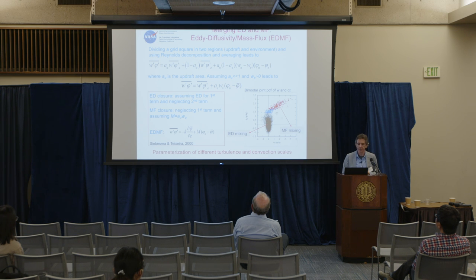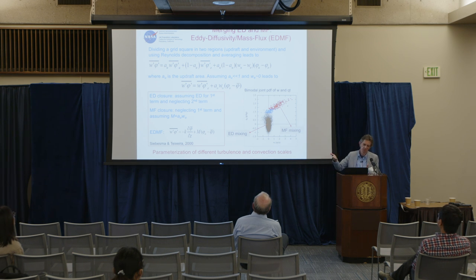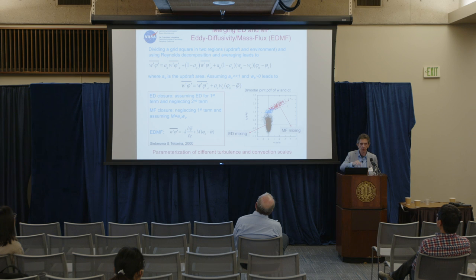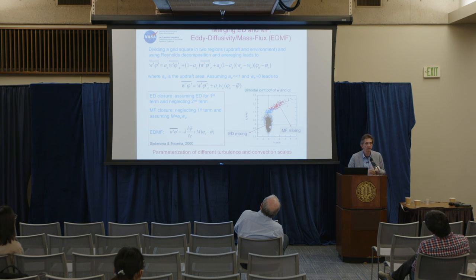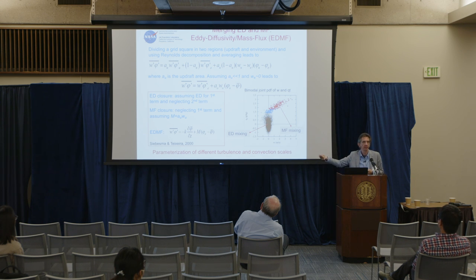This is a cut of an LES — a large eddy simulation — across a shallow convection case, probably Bomex, about 500 meters above cloud base. If you plot the values of total water and vertical velocity, you'll see two fundamental regions of mixing: one that is much more Gaussian-looking, representing small-scale mixing that can be represented by eddy diffusivity, and the other a highly skewed part of the distribution where the plumes are actually bringing properties from the subcloud layer to levels above.